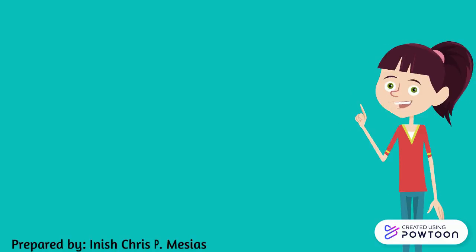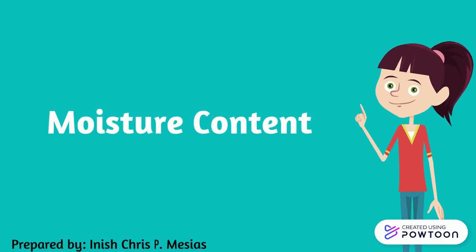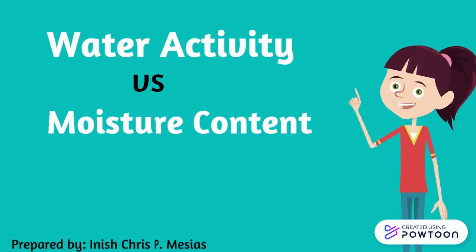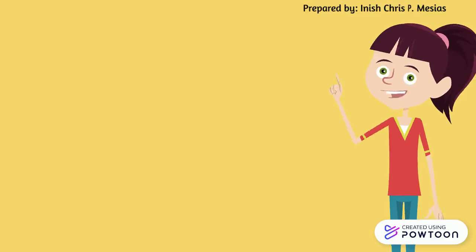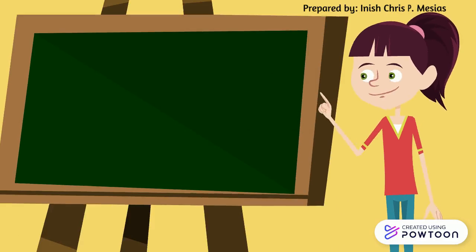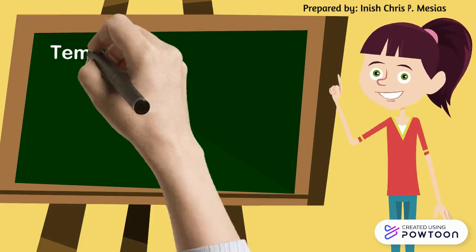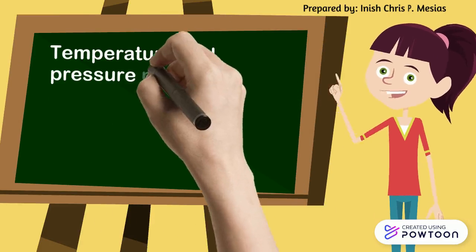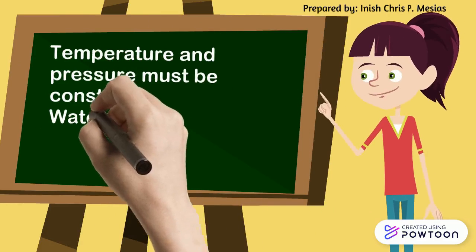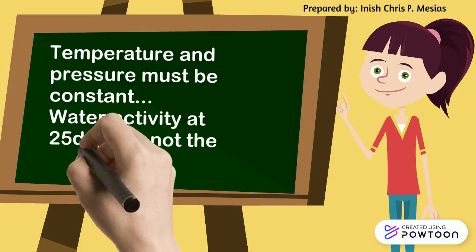Previously, we've learned what is moisture content and water activity and how both are measured. In addition, I'd like to point out that in determining the water activity, temperature and pressure must be constant. Water activity at 25 degrees Celsius will be different than that at 35 degrees Celsius.